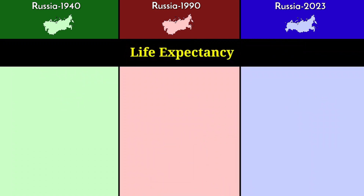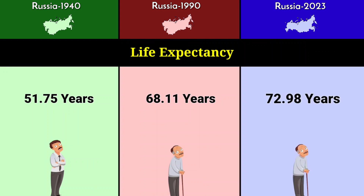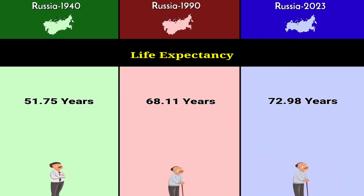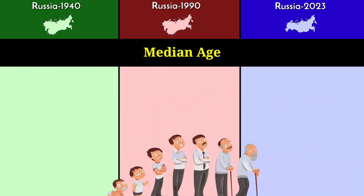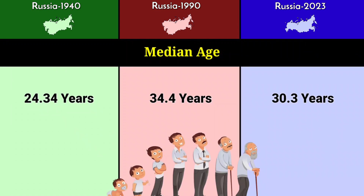Life expectancy: 51.75 years in 1940, 68.11 years in 1990, and 72.98 years in 2023. Median age: 34.4 years in 1940, 24.34 years in 1990, and 30.3 years in 2023.